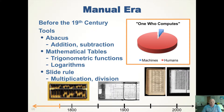The problem is that to build these tables, you had to actually do the math. They had rooms or large groups of people just standing there doing the math to build the tables. There were a lot of errors in these tables because humans often make mistakes — transposition of numbers, mistakes in the algorithm. It was known that these wonderful tables had errors, but that was basically what you had to use. There was a need to get rid of human error in those calculations.